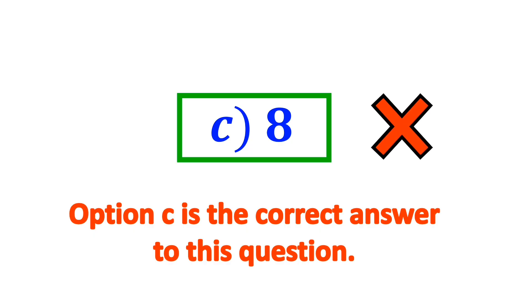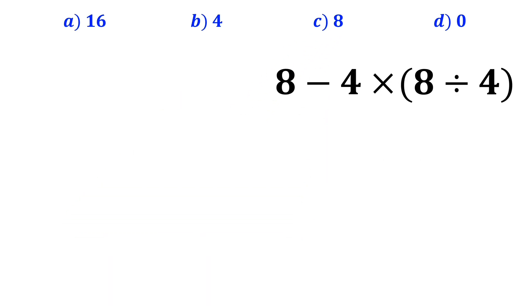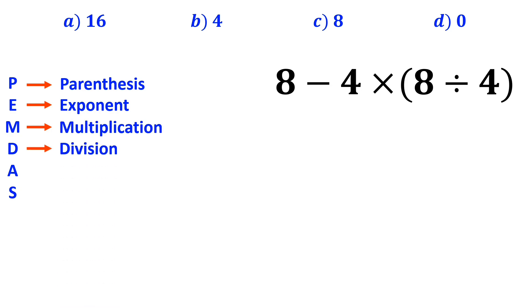But that's definitely wrong. To solve this question, we need to follow the PEMDAS rule. In this rule, P stands for parenthesis, E stands for exponent, M stands for multiplication, D stands for division, A stands for addition, and S stands for subtraction. We have to follow the order of operations step by step from top to bottom.